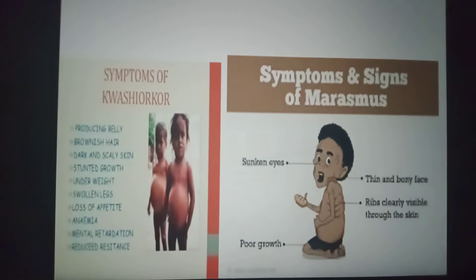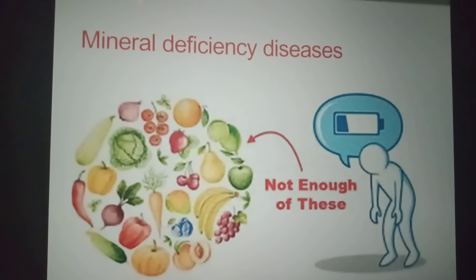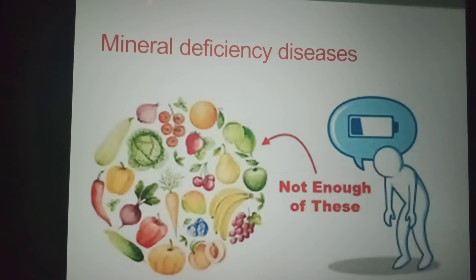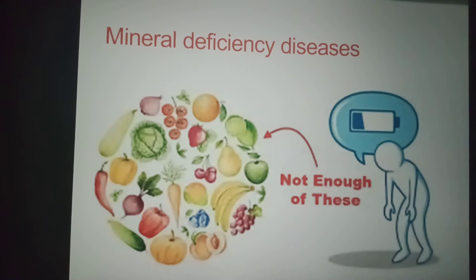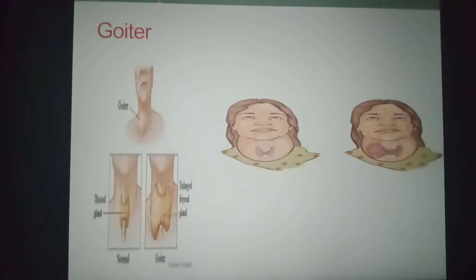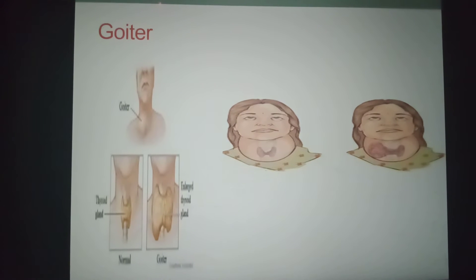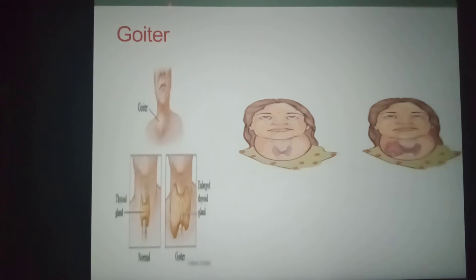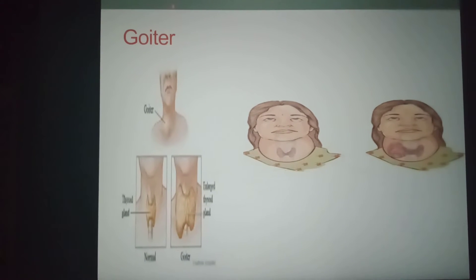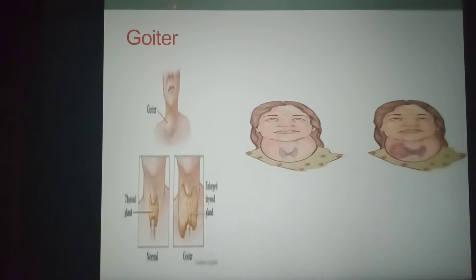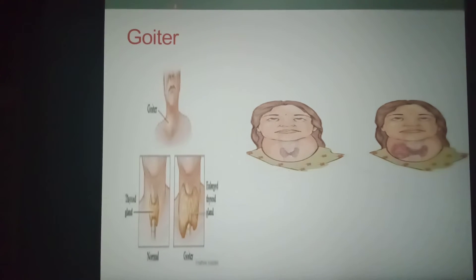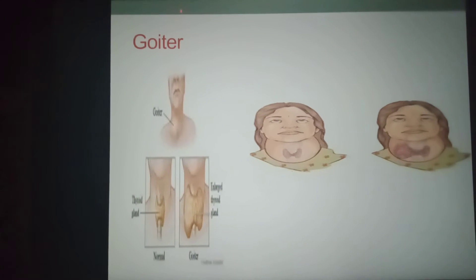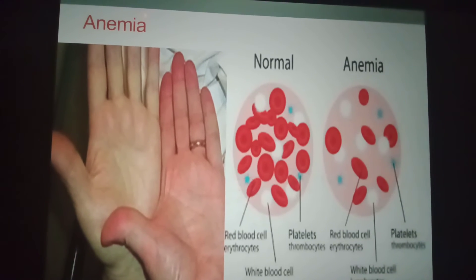Kwashiorkor symptoms include protruding belly, brownish hair, dark and scaly skin, stunted growth, underweight, swollen legs, loss of appetite, anemia, mental retardation, and reduced resistance. Next is mineral deficiency diseases. Diseases resulting from the deficiency of a mineral are relatively rare among humans. One example is goiter — a condition caused by an insufficient amount of iodine in the diet. Iodine is used by the thyroid gland to produce hormones that control the body's normal functioning and growth.